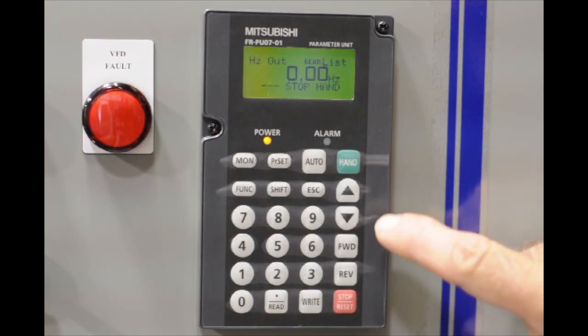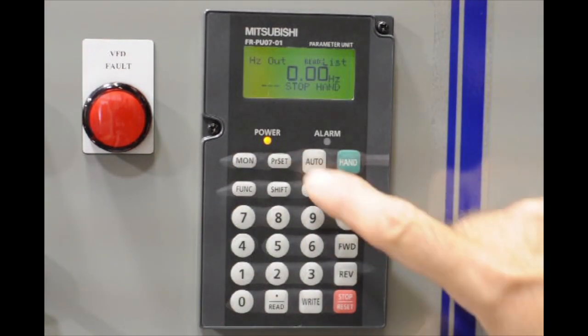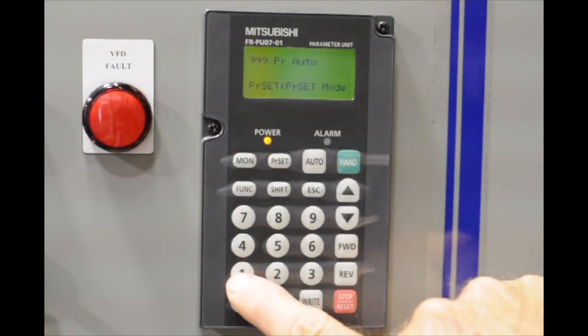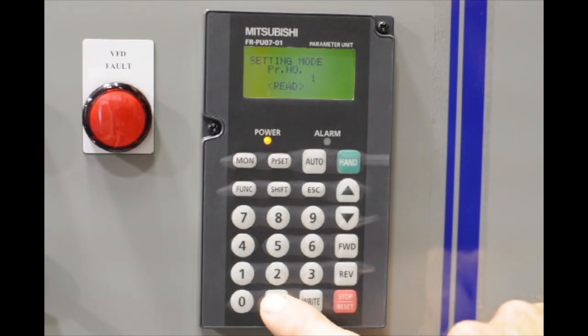As you look at the top row of this keypad, there's the PR set button. We're going to go ahead and push this one time, and we're going to choose parameter one, and at the very bottom, we're going to hit read.